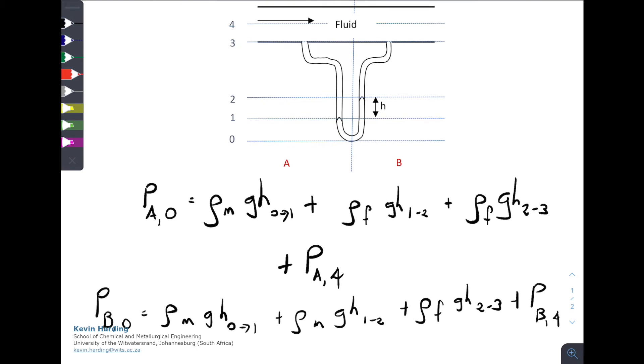In the same way, we can calculate the pressure for B at point 0 by adding up the portions for ρGH from 0 to 1, from 1 to 2, and 2 to 3, and then adding the pressure on side B for point 4.